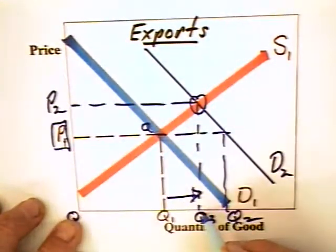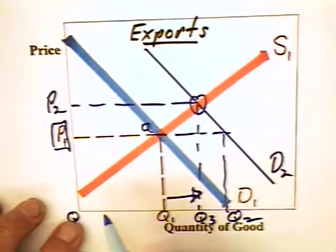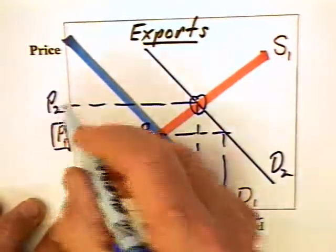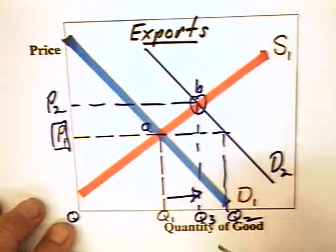With international trade, the price goes to P2, quantity Q3, and now the revenue that can be received is 0, P2, B, Q3.